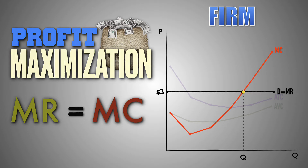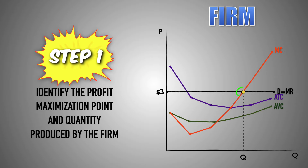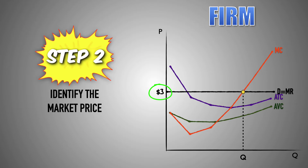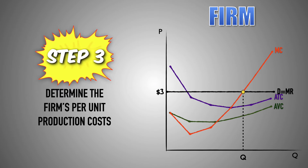From here, we can use the graph to determine revenue, costs, profits, and losses for the perfectly competitive firm. There are a few simple steps to follow. First, we must identify the profit maximization point and the quantity of output that will be produced by the firm. We must also identify the market price at which the firm will sell its output. The next step is to use the output line to determine the firm's per-unit costs. The variable cost per unit can be identified where the quantity line intercepts the AVC curve, and the total cost per unit can be identified where the quantity line intercepts the ATC curve.